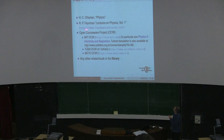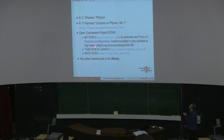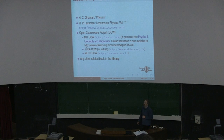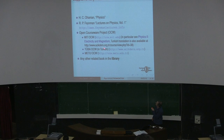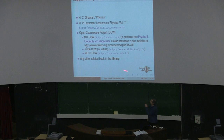We have additional materials: the book by Ohanian, and the Feynman lectures, which I strongly advise you to read. There is also material from MIT OpenCourseWare — this was Walter Levin's course. Unfortunately his videos were removed from the open courseware, but Turkish translations are still available on the web. The MIT OpenCourseWare site also has many sources for other subjects, and of course the library has lots of resources.